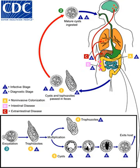Amoebiasis caused about 55,000 deaths worldwide in 2010, down from 68,000 in 1990. In older textbooks it is often stated that 10% of the world's population is infected with Entamoeba histolytica. It is now known that at least 90% of these infections are due to E. dispar. Nevertheless, this means that there are up to 50 million true E. histolytica infections and approximately 70,000 die each year, mostly from liver abscesses or other complications. Although usually considered a tropical parasite, the first case reported in 1875 was actually in St. Petersburg in Russia, near the Arctic Circle. Infection is more common in warmer areas, but this is because of both poorer hygiene and the parasitic cysts surviving longer in warm moist conditions.